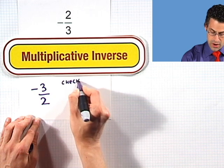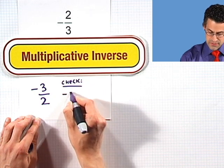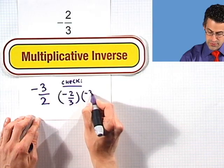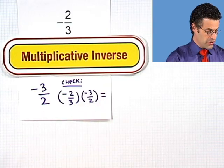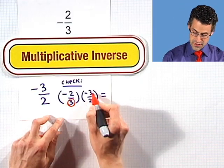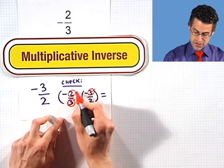And again, you can check if you want: negative 2 thirds times negative 3 over 2. What do we get? Well, you'll notice we can reduce quite a bit.